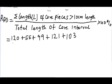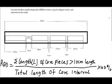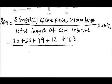So let's divide it by the total length of core interval. From the diagram, the total length of core interval is 550 cm times 100%. So let's sum up all the values.